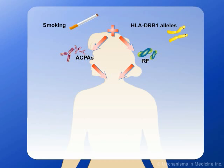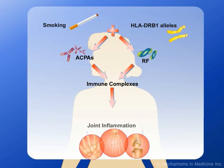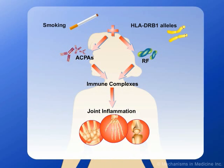However, it is recognized that an individual who develops both RFs and ACPAs has the highest risk of developing arthritis in the future, through the formation of immune complexes.